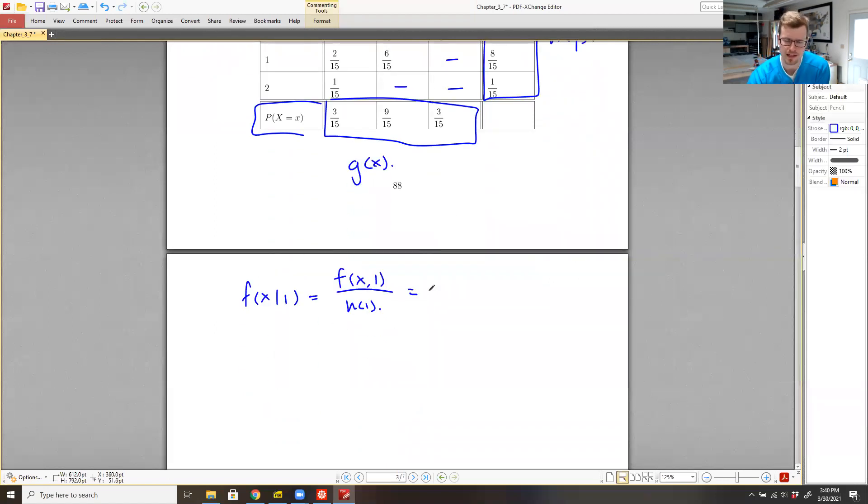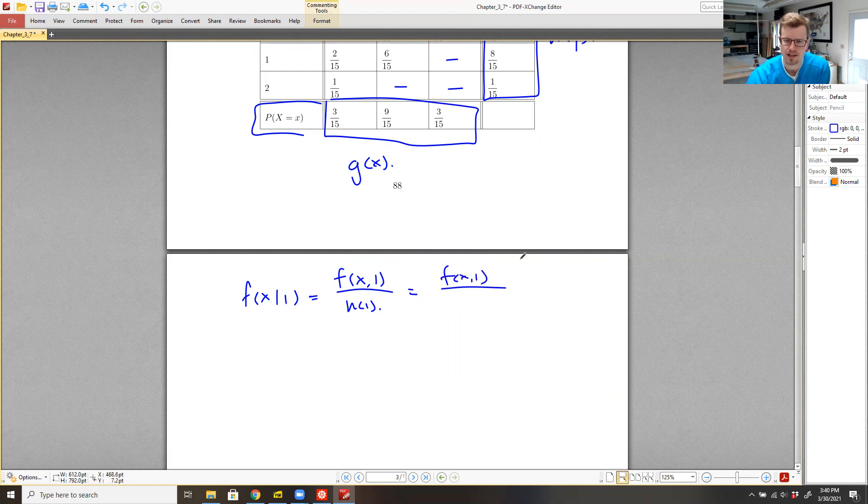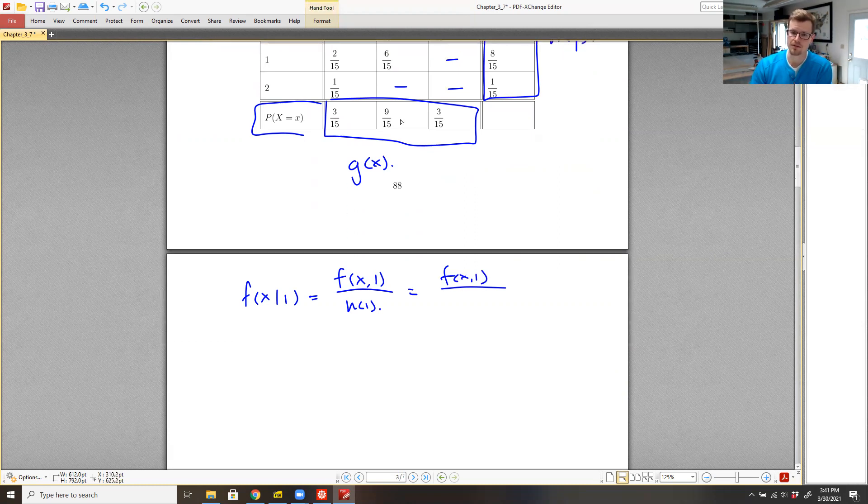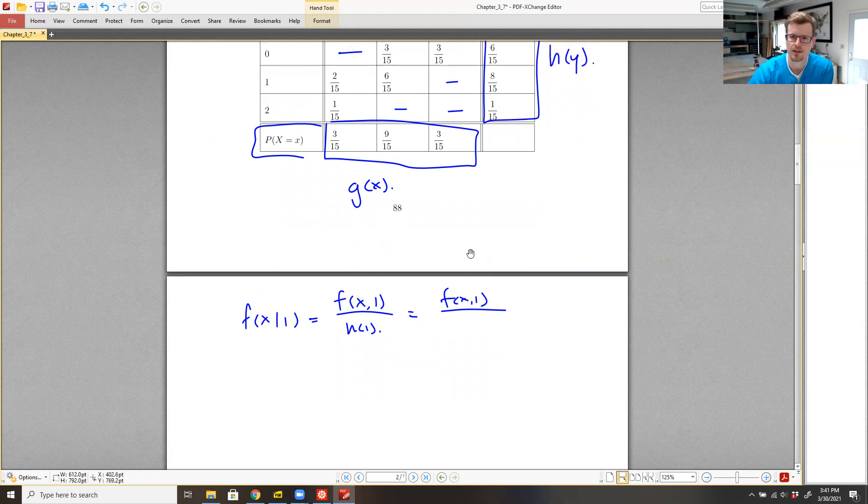So we can evaluate this. Again, f of x one is essentially a piecewise defined function. These are the three different values that it takes on for the three different inputs. And then h of one is eight fifteenths.